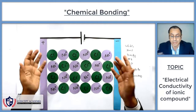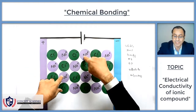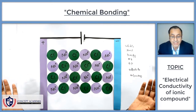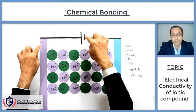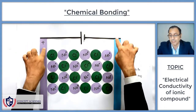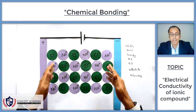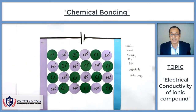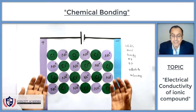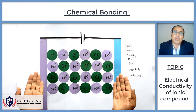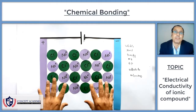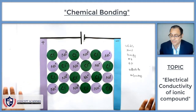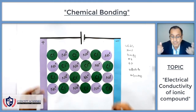Ionic compounds at room temperature are in the solid state. In the solid state, there are positive and negative ions, but they cannot move. When they cannot move, they cannot conduct electricity. If we have a battery with a positive side and a negative side, electrical conductivity is not possible because the ions cannot move. So ionic compounds in the solid state cannot conduct electricity.